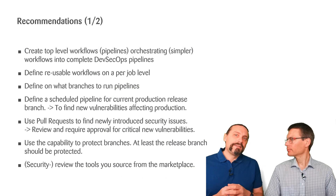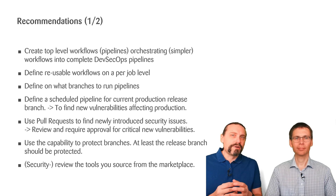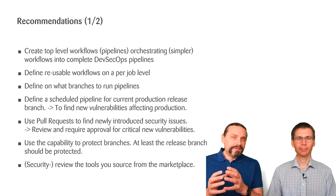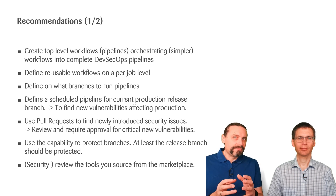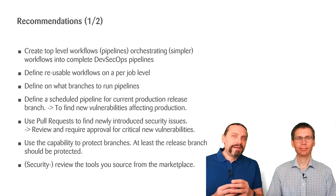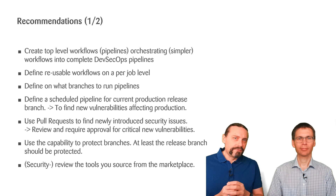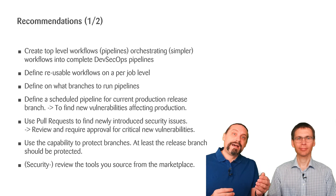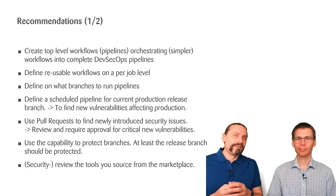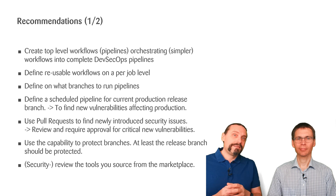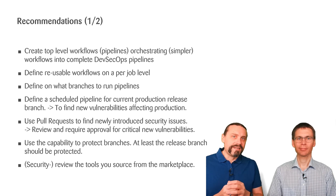You need to define on what branch you want to run which pipeline. You can even have different pipelines for your different branches, and you need to schedule your pipeline, defining on which branch the scheduled pipeline runs. Scheduling is important because you already have a version of your application in production and the pipeline won't always run on the productive code otherwise. Check our video about scheduled pipelines for more information.